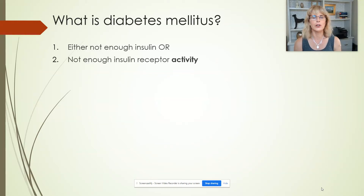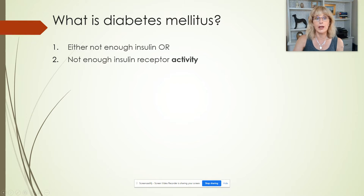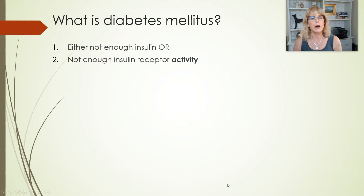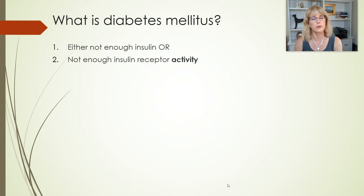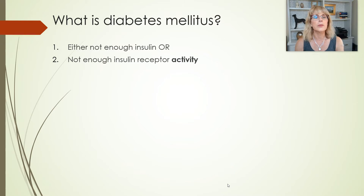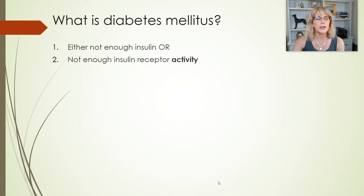Let's keep talking about sugar diabetes, which we now know should be known as diabetes mellitus. Diabetes mellitus will be caused either by not enough insulin, the hormone, being produced by beta islet cells, or in some cases, there is plenty of insulin being produced, but something is wrong with the insulin receptor.